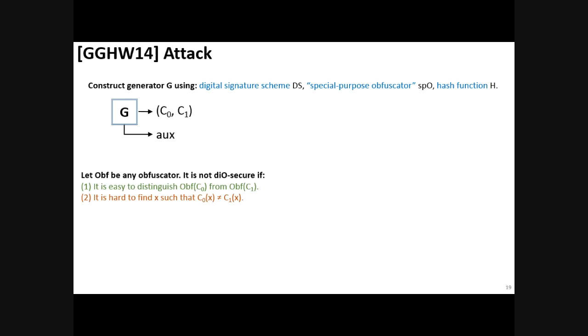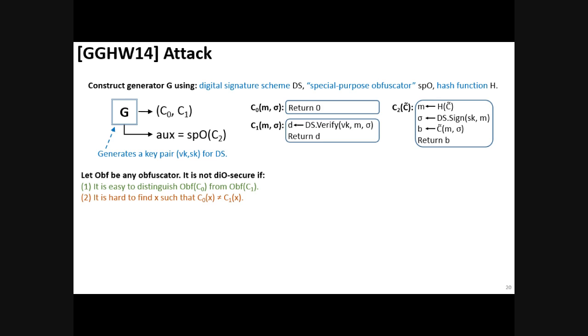The generator outputs two circuits and auxiliary information. In order to show that DIO is implausible, they show that whatever obfuscator is used to obfuscate these two circuits, there exists a distinguisher that can distinguish obfuscation of C0 from obfuscation of C1. They also argue that it is hard to find an input on which these two circuits are different.